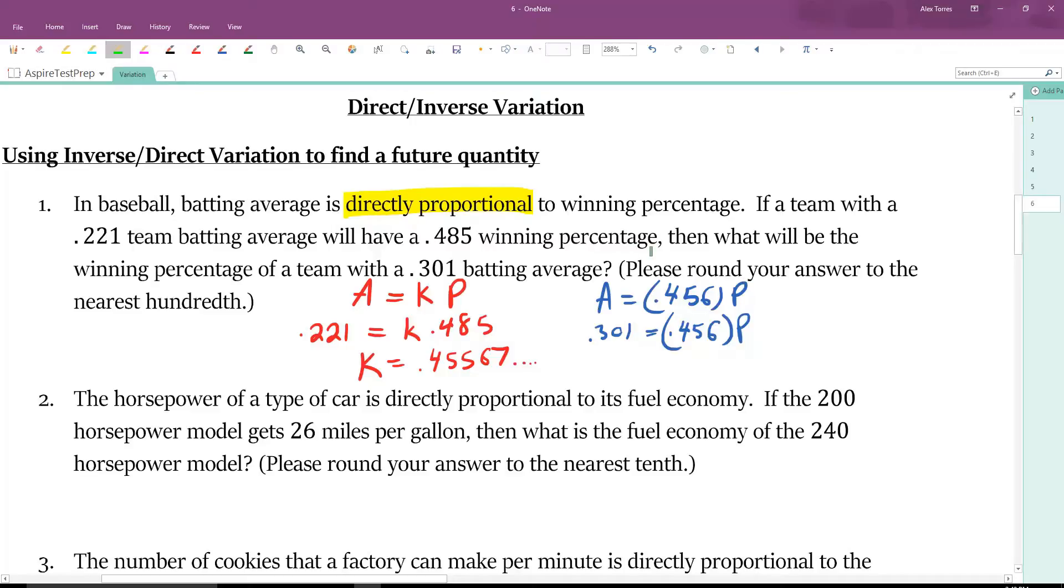For any value of a, we could find an accompanying value of p. For any value of p, we could find a matching value of a. So, now we've got 0.301 equals 0.456p. We can divide both sides by 0.456. 0.301 divided by our decimal, 0.456.